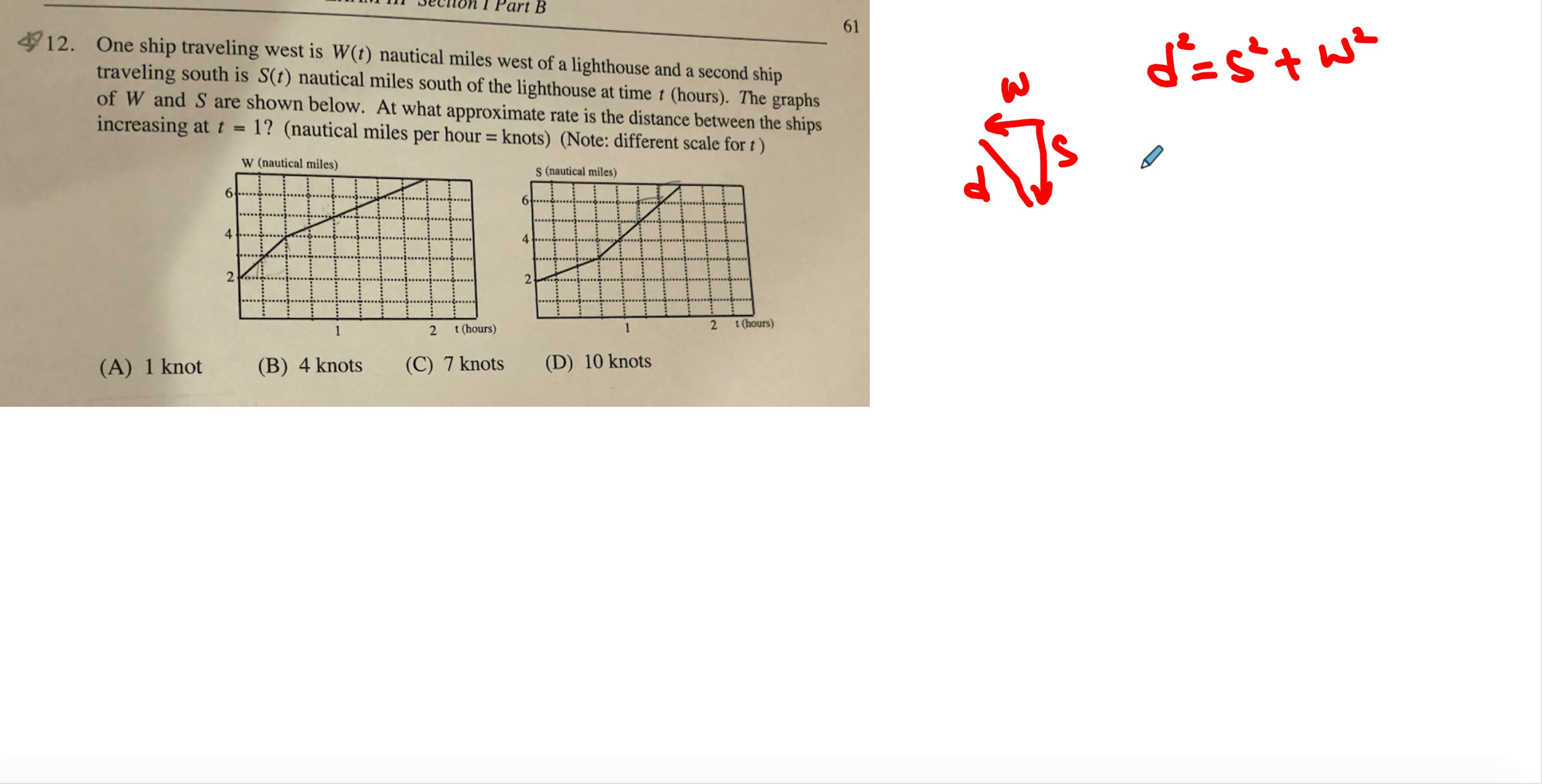Now from here we can take the derivative 2d dddt equals 2s dsdt plus 2w dwdt.